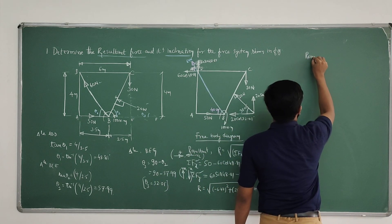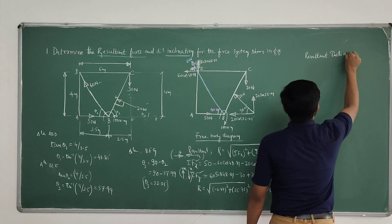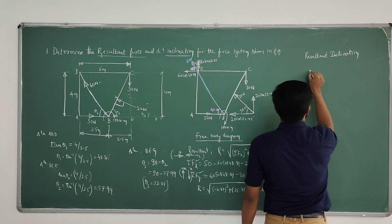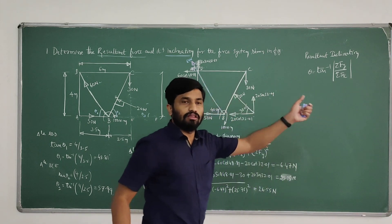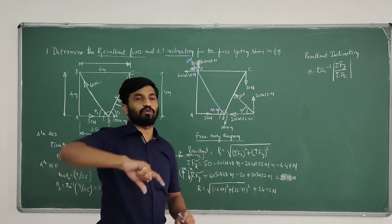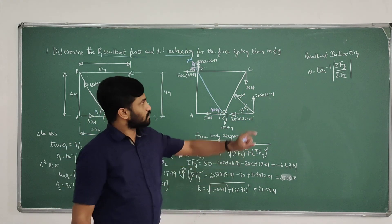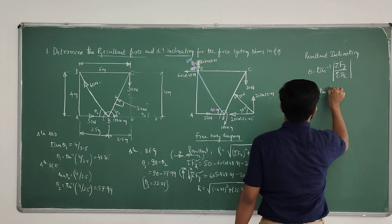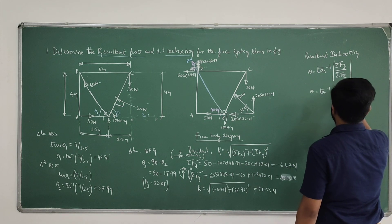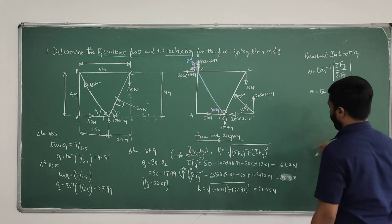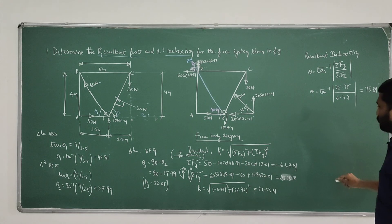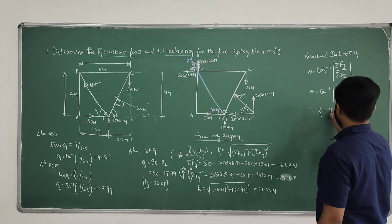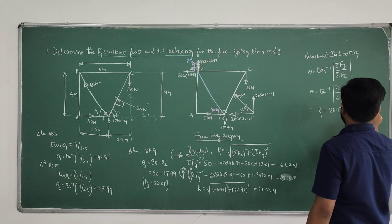Now for resultant inclination: theta equals tan inverse of the magnitude of sigma Fy divided by sigma Fx. If there are any negative values in sigma Fx or sigma Fy, consider them as positive since we are measuring a positive angle. So theta equals tan inverse of 25.75 divided by 6.47, giving theta equals 75.89 degrees. Therefore R equals 26.55 Newton and theta equals 75.89 degrees.